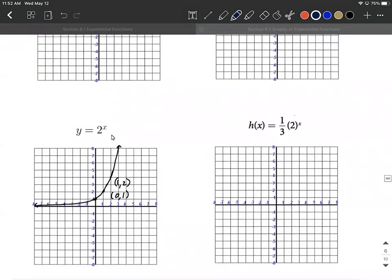Let's look at one more example. This time we'll have what we refer to as a compression. Whenever that multiple in front is between 0 and 1, we call that a compression.